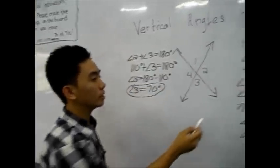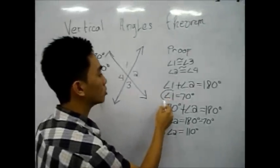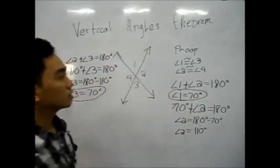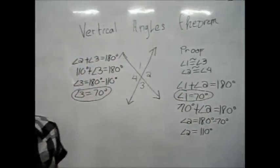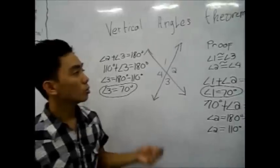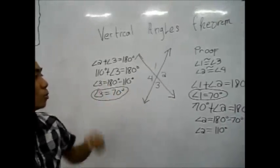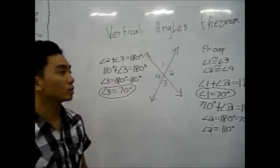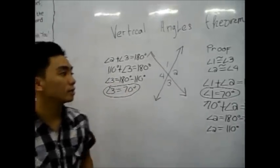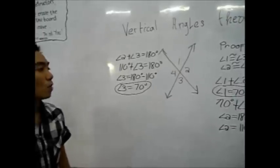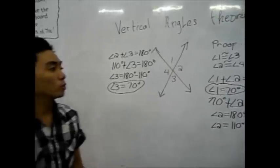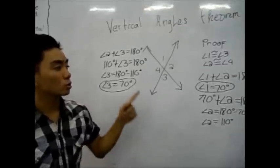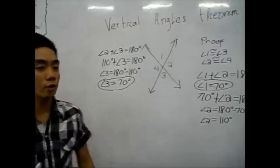Angle 1 and Angle 3 are both 70 degrees, so we can say that Angle 1 is logically equivalent to Angle 3. Similarly, Angle 2 is logically equivalent to Angle 4, and we can prove it.